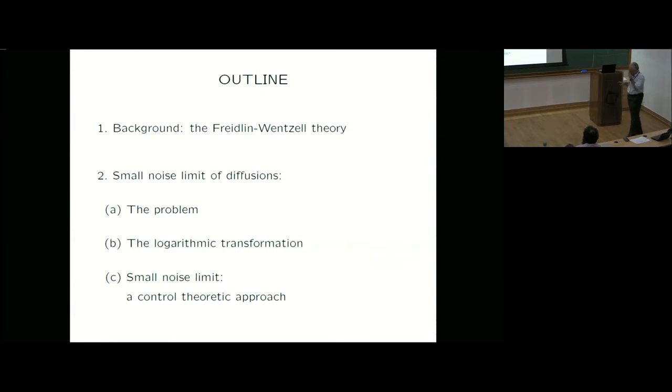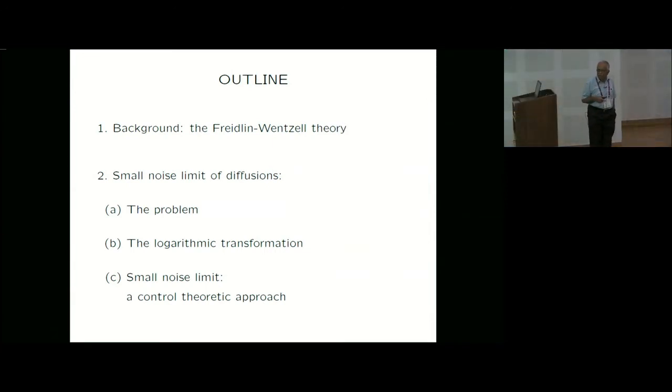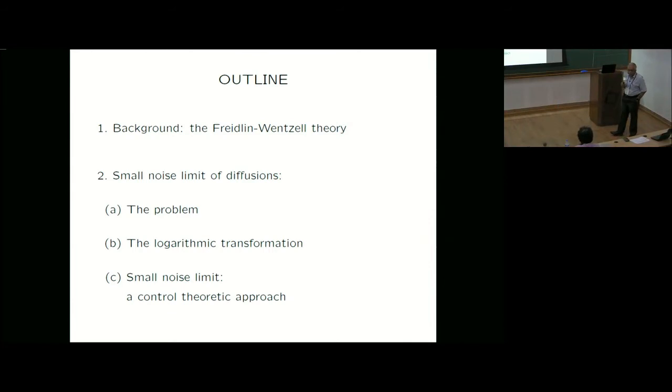I'll describe the problem, and then there's this standard trick called the logarithmic transformation which has been exploited to the hilt by many people. Then the main result, which is the small noise limit, and different here is the control theoretic approach. The results of this flavor, namely the small noise limit in the stationary regime, are already there in Friedland-Mensel's book, but they consider diffusions on a compact manifold. There's also other work post Friedland-Mensel and before our work, particularly by S.J. Hsu. The gain in using the control theoretic approach has been primarily to expand the scope, in the sense of giving this kind of characterizations under somewhat broader conditions.